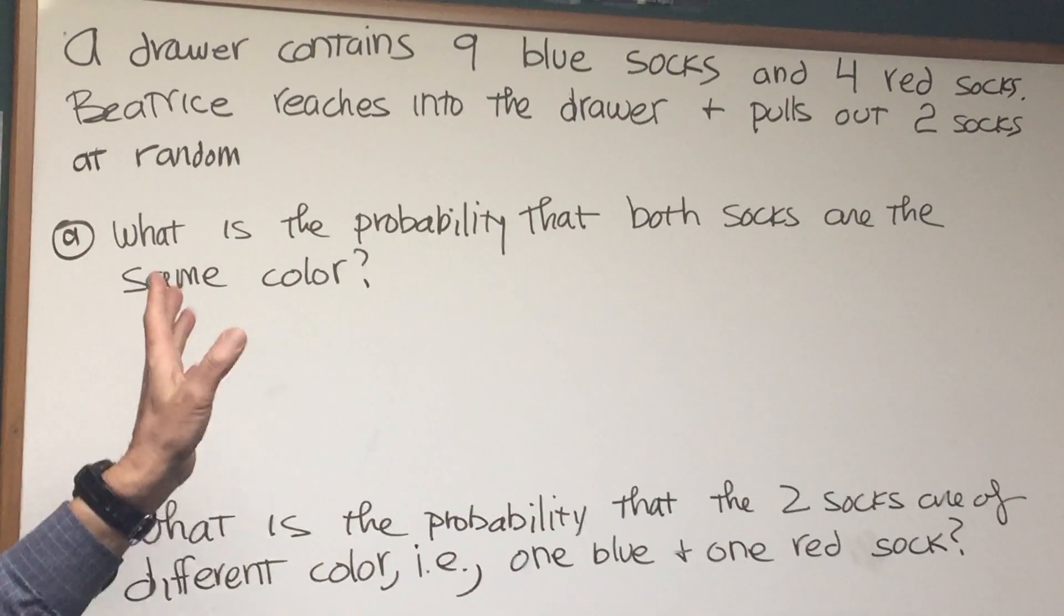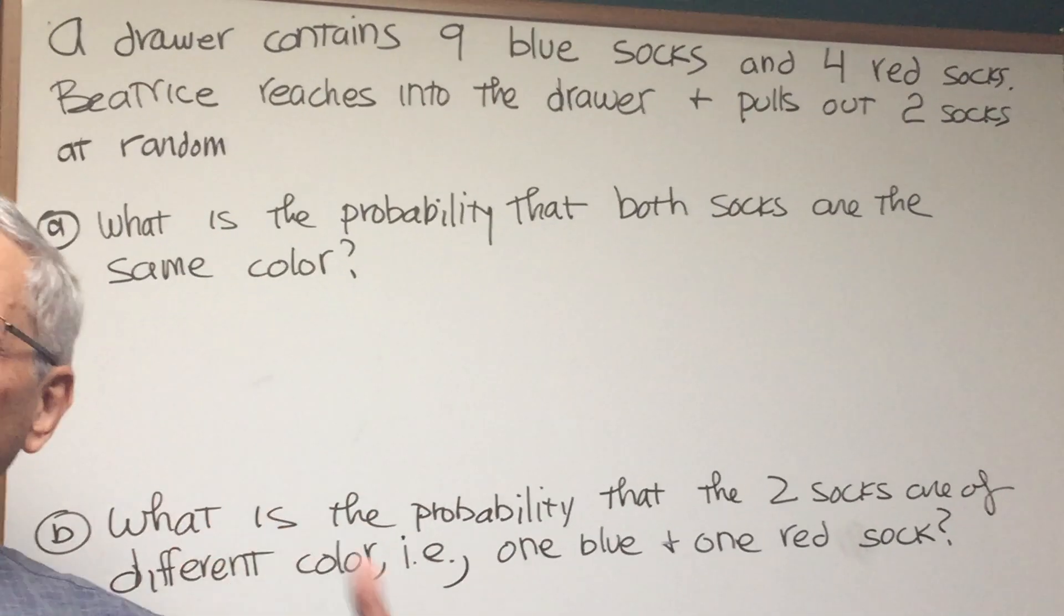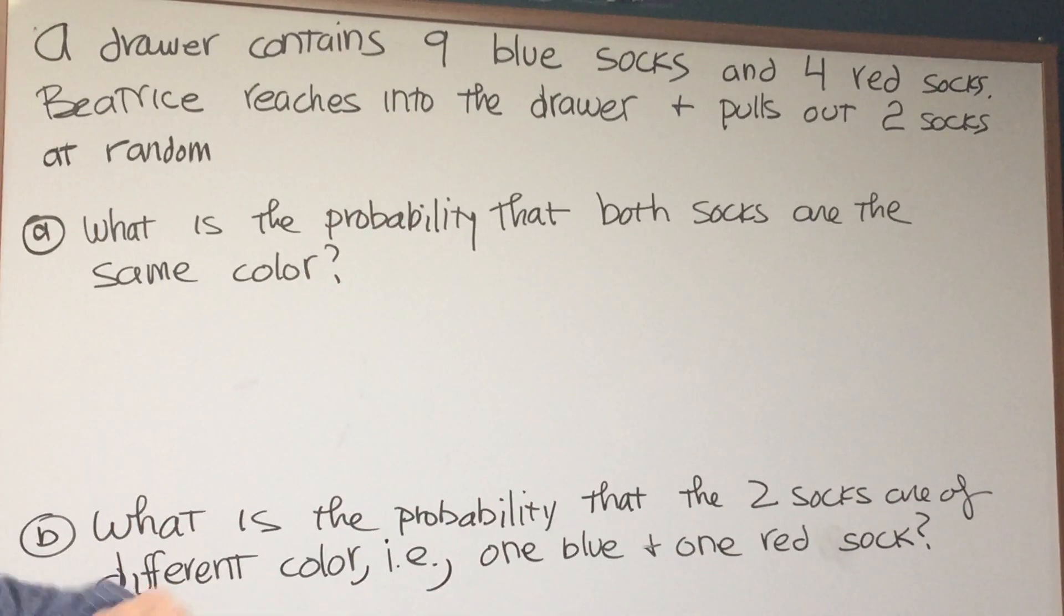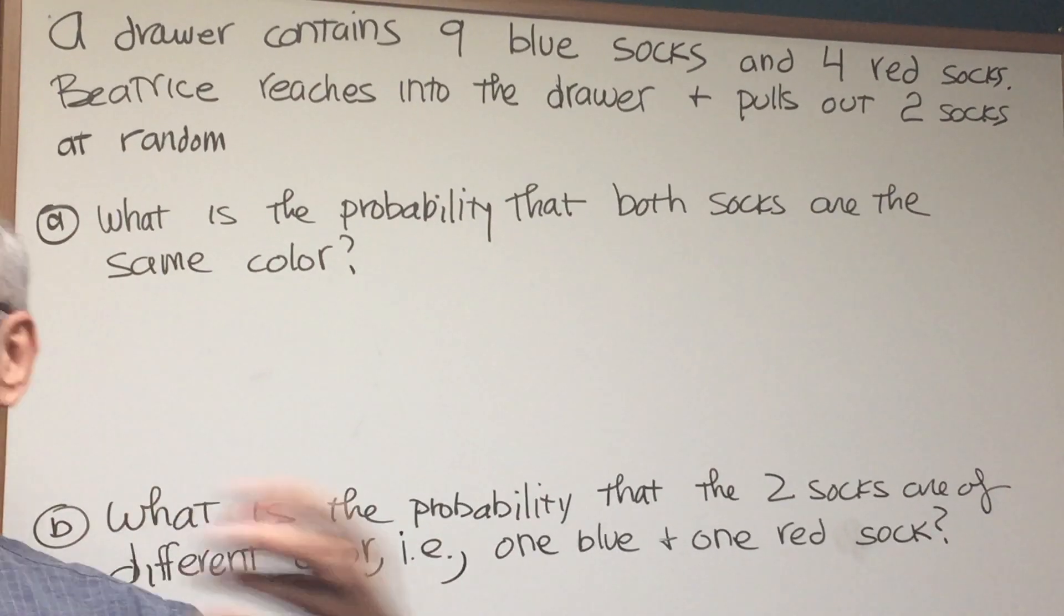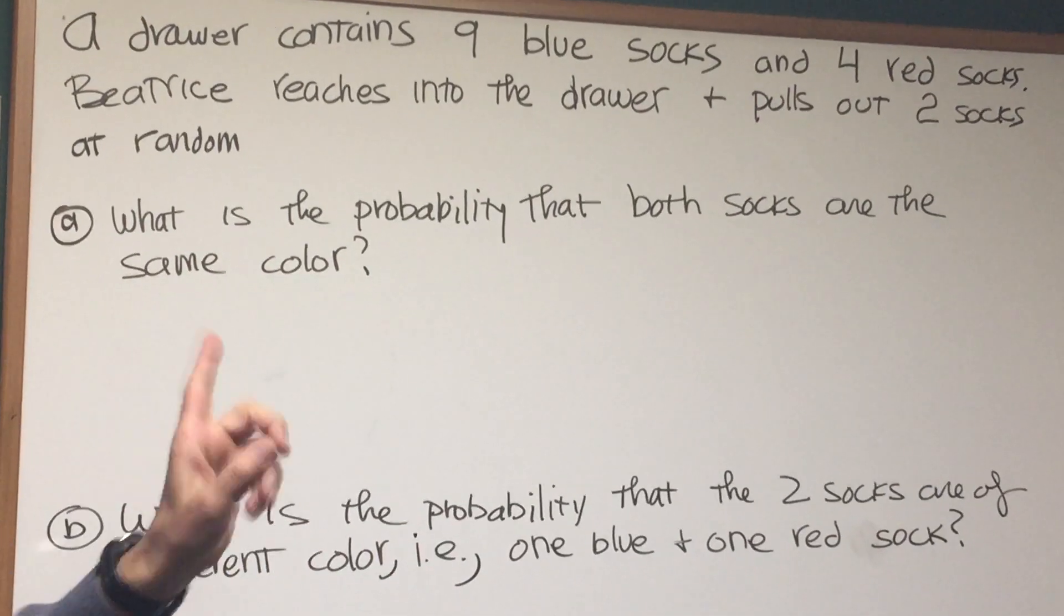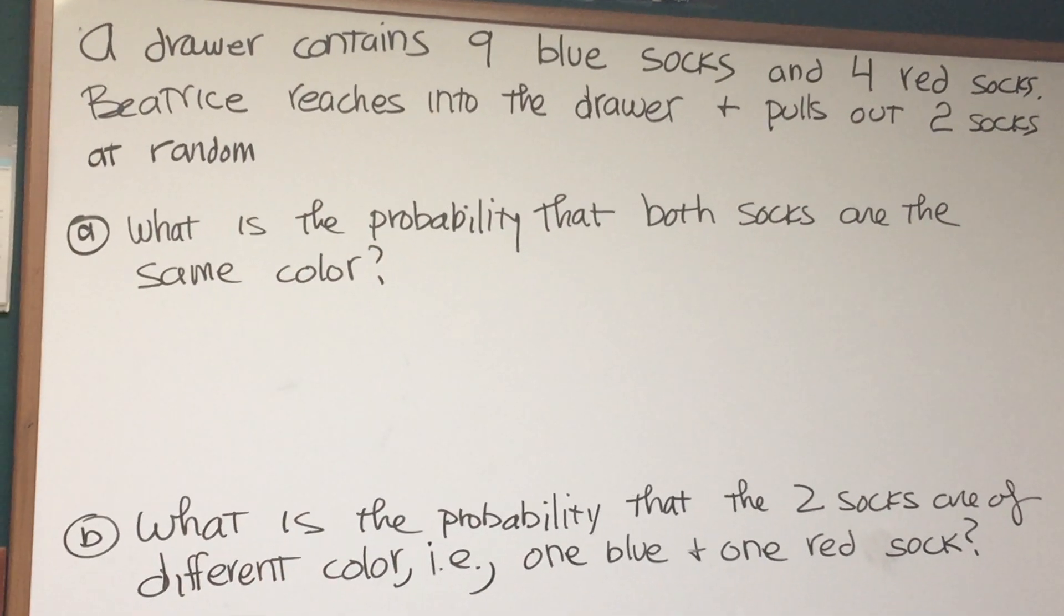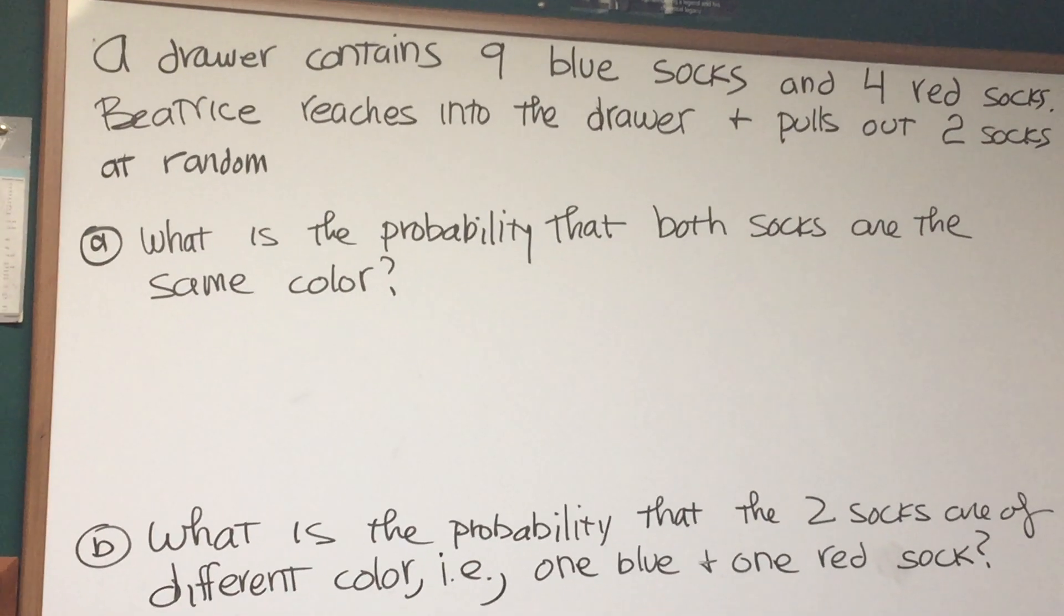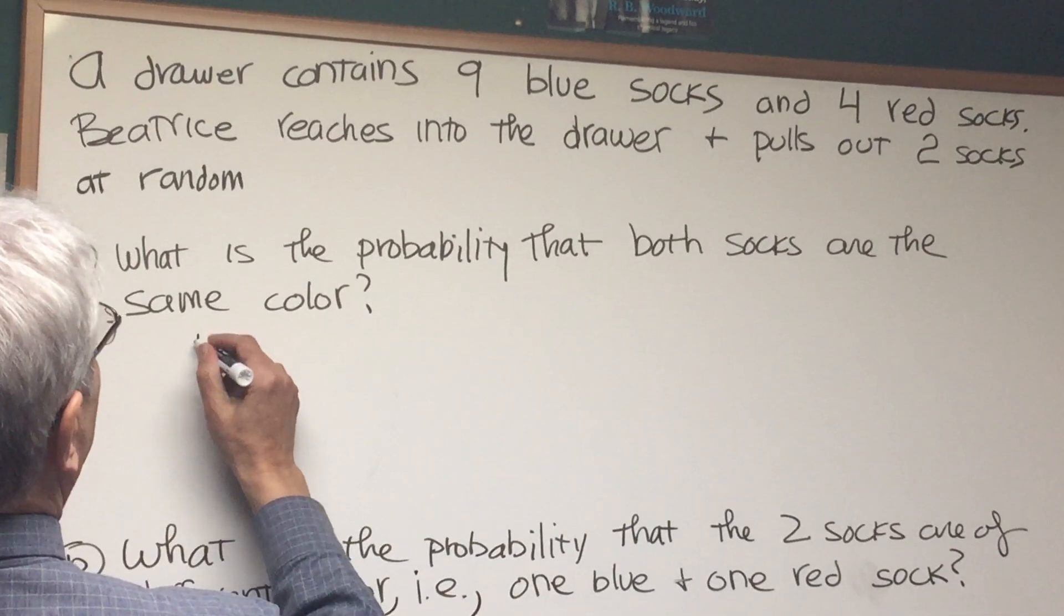Now we're looking for a probability of two blue socks or two red socks. Now how are we going to model this? The question may come up, do we treat this as a selection with replacement or without replacement? So it's interesting, the two socks are pulled out simultaneously but the way they're modeled is if they're done sequentially, one after the other. So what we're looking for, let's write this down, we're looking for the probability of blue and blue.